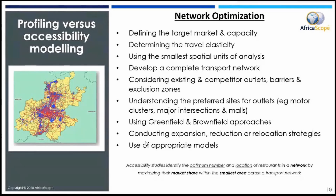Within these strategies, there are a number of models that one can utilize to optimize market share, coverage of the market, or minimizing travel times. This network optimization is really about the implementation of what we call an accessibility study — which is about optimizing the number and locations of restaurants, fast food outlets, or retail outlets in a network by maximizing their market share within the smallest area possible across a transport network.